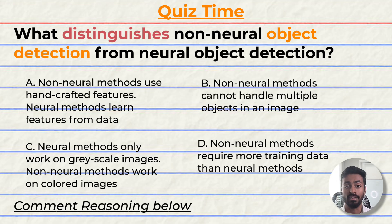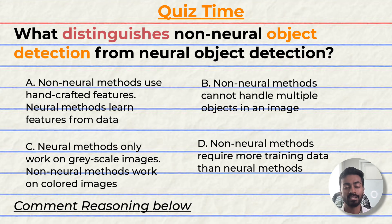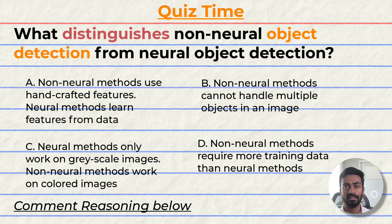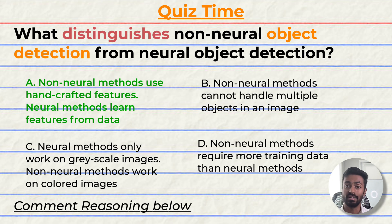Quiz time. Have you been paying attention? Let's quiz you to find out. What distinguishes non-neural network object detection from neural network object detection? A. Non-neural methods use handcraft features, while neural methods learn features from data. B. Non-neural methods cannot handle multiple objects in an image. C. Neural methods work only on grayscale images, while non-neural network methods work on colored images. D. Non-neural network methods require more training data than neural methods. The correct option is A. But can you tell me why? Please comment your reasoning down in the comments below and let's have a discussion.